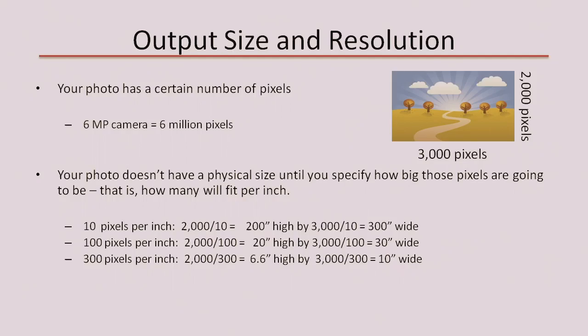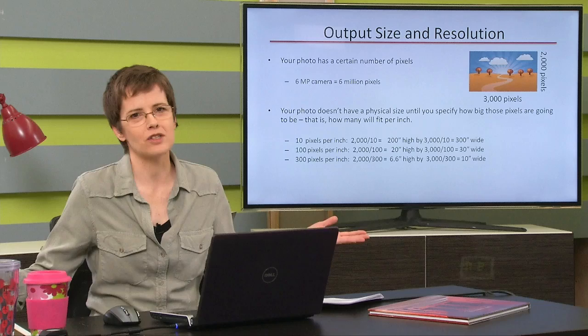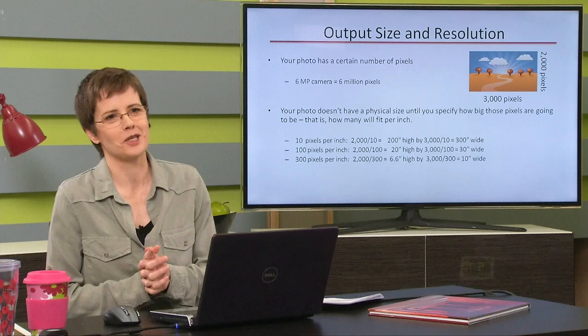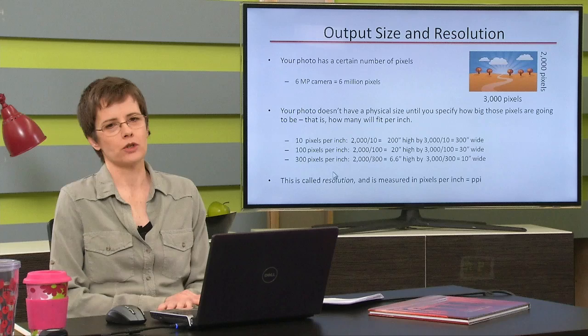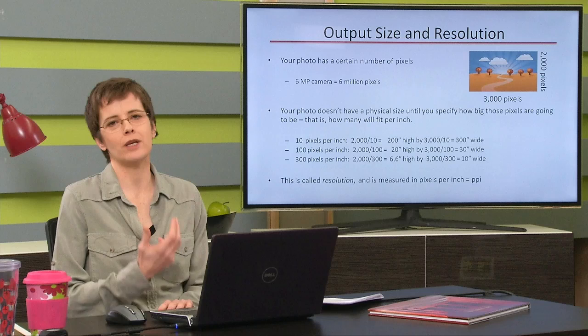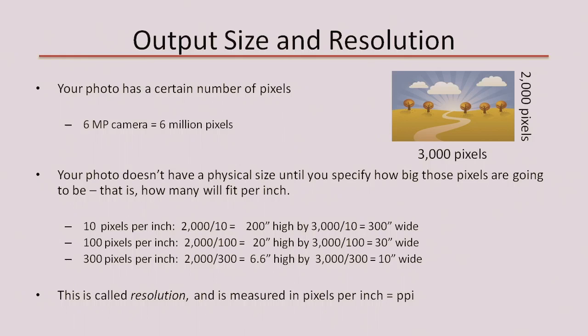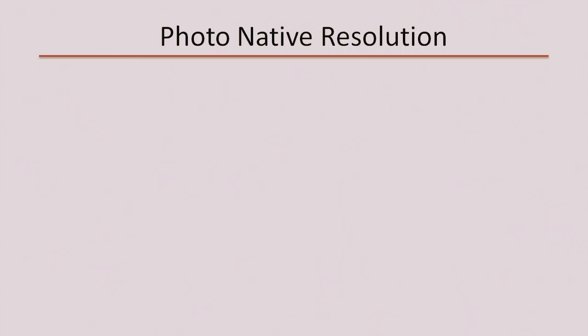I realize that a lot of you are overseas and work in centimeters. The concepts are exactly the same — I should say inches or centimeters every time out of respect for the rest of the world, but I'm just going to leave it at inches. Pixels per inch is called resolution, measured in pixels per inch, abbreviated PPI or PCI for centimeters. That's the simple concept of resolution: how many we're packing in per inch.